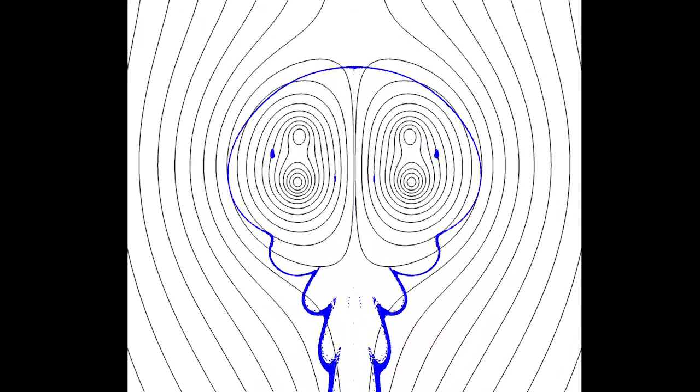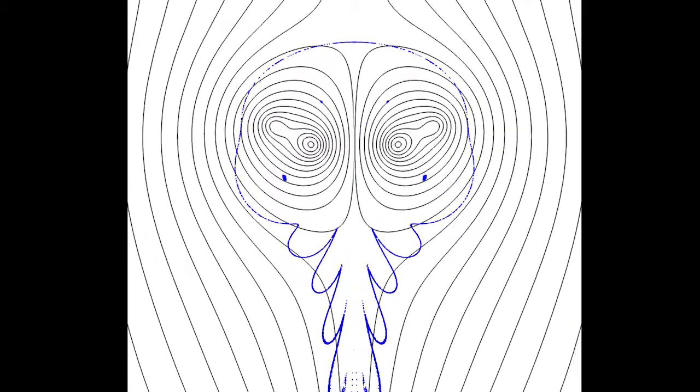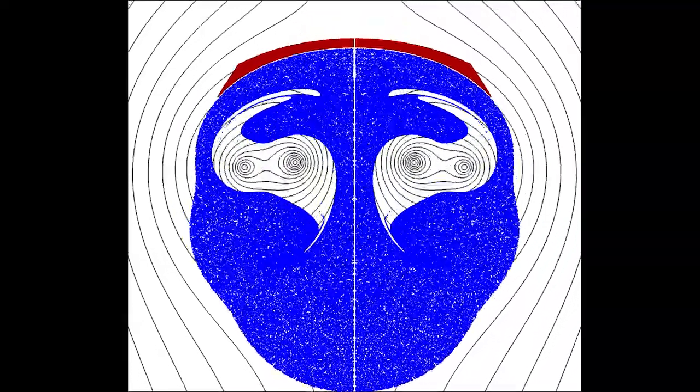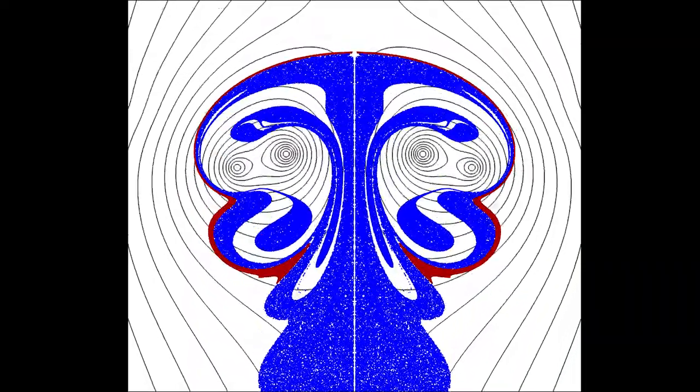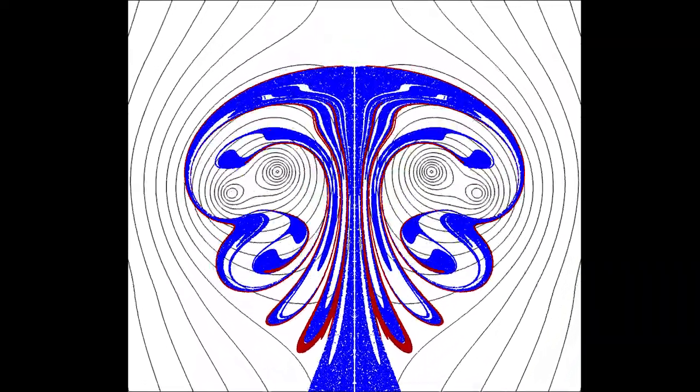In this particular case, we constructed a system where the dynamics of the vortices stabilize particle trajectories that correspond to motion opposite the average direction of the flow.